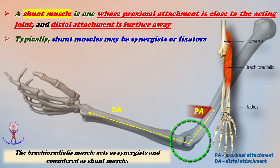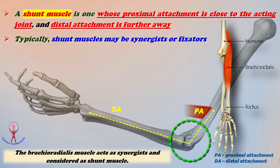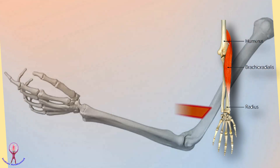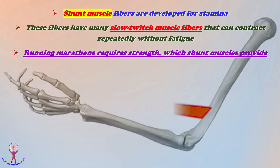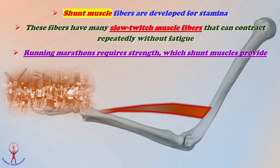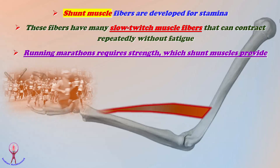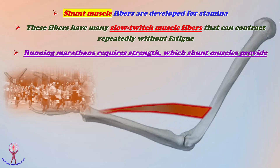The brachioradialis muscle is considered a shunt muscle because its proximal attachment arises from the lateral supracondylar ridge of the humerus, and distally it is attached to the styloid process of the radius bone, which is far away from the elbow joint. The shunt muscle fibers are developed for stamina, having many slow twitch muscle fibers that can contract repeatedly without fatigue. Running marathons requires stamina, which shunt muscles provide.